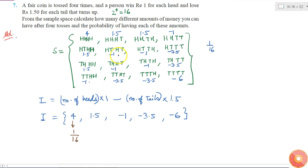And for 1.5 there are 4 favorable outcomes, so it will be 4 by 16, which is equal to 1 by 4. For minus 1 there are 6 favorable outcomes, so for this probability is 6 by 16 or 3 by 8.